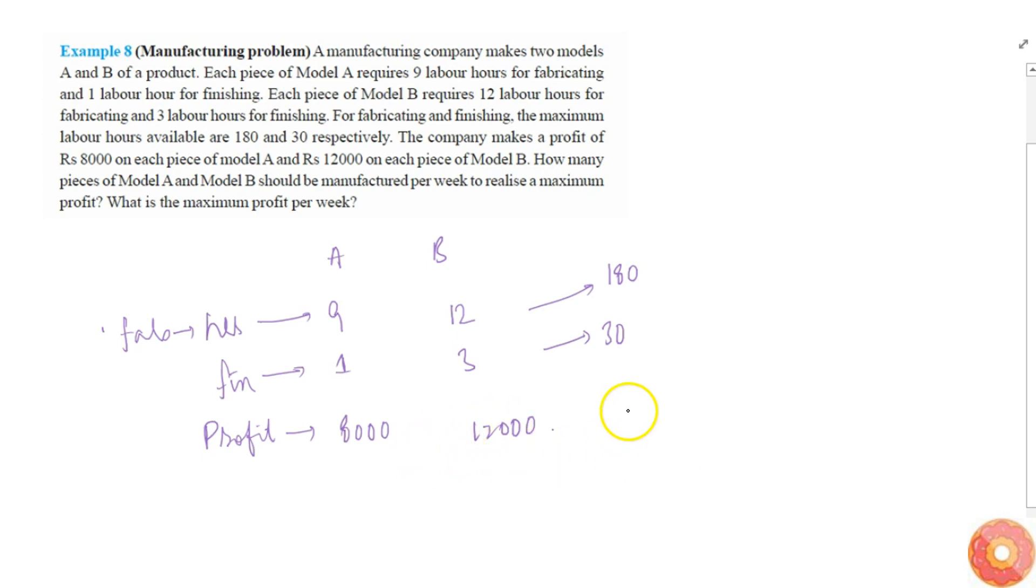So, per week. We are asked for a week. What is a maximum profit? This is for one. Let's say we manufacture X units of Model A and Y units of Model B for a week. And we are given that in a week the maximum labor hours available are 180 and 30. For this and within. So, that means 9X plus 12Y must be less than 180.